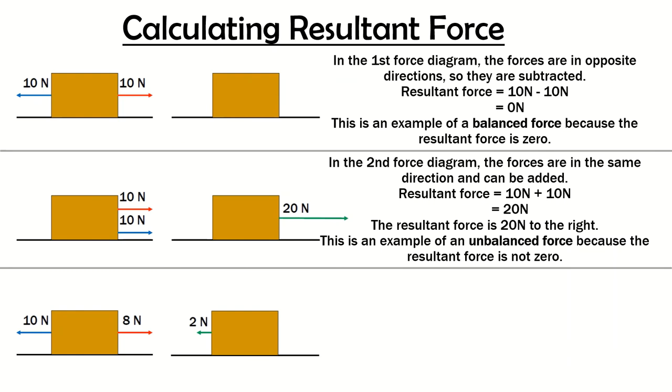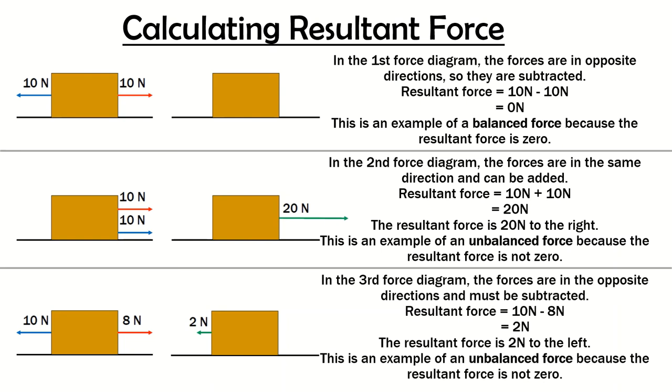And the last example, we have again two forces acting in opposite directions, one is 10 newtons and one is 8 newtons. So in the third force diagram, the forces are in opposite directions and therefore must be subtracted. 10 newtons minus 8 newtons equals 2 newtons. Just a note here, if you're subtracting forces because they're in opposite directions, always put the bigger force first.